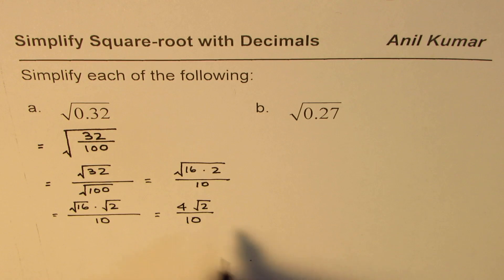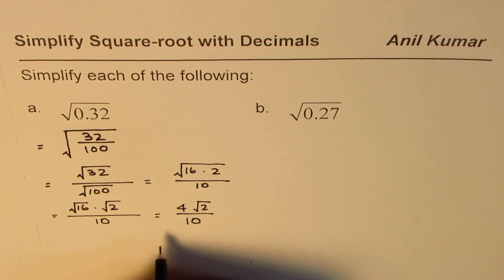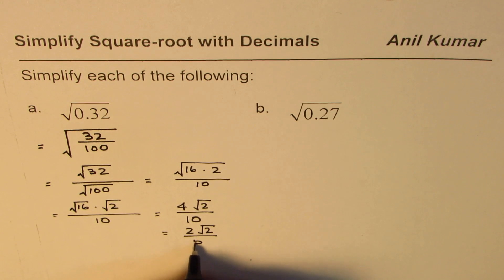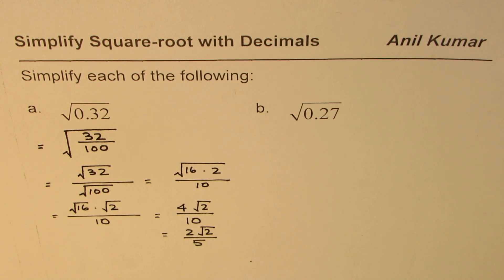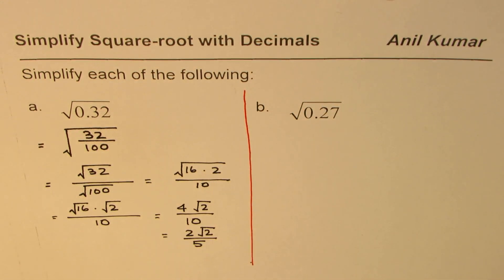Now we can simplify this expression. 4 and 10 can both be divided by 2, so we get 2√2 over 5 as our simplified form of square root of 0.32. I hope the steps are clear. We will follow the same steps for the next one, and then you can practice some more.